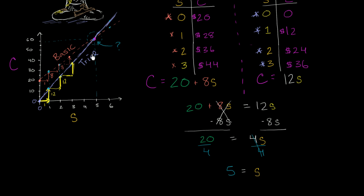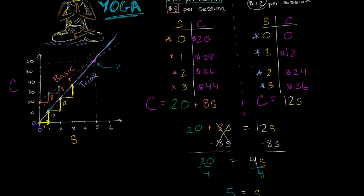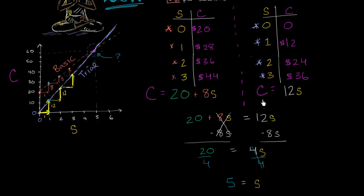So we eyeballed it. It looked like 5 sessions, and now we know for sure. At 5 sessions, the cost of either plan is going to be the same. But what is the cost of either plan there? Well, we should be able to go to either plan because the cost will be the same. So if we look at our trial plan, and we save 5 sessions, how much will that cost? The cost is going to be 12 times 5, which is going to be $60.